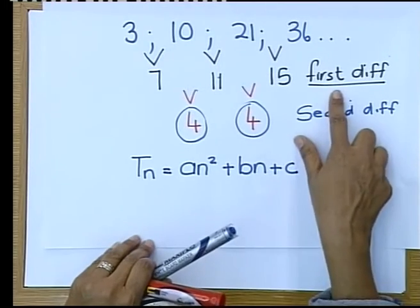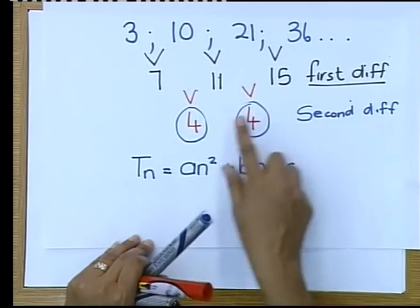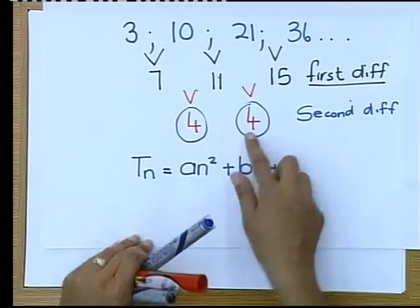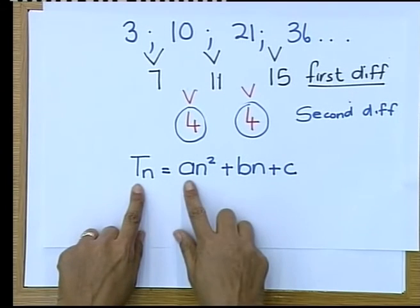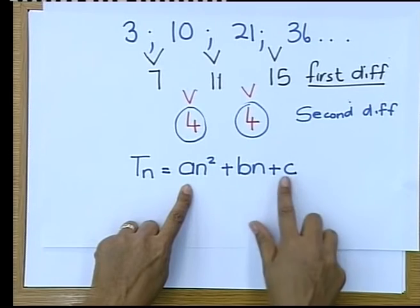So you checked your first differences, you saw it was not the same. You checked your second differences, you saw it's the same. You saw that it is four and you immediately wrote down TN is AN squared plus BN plus C.